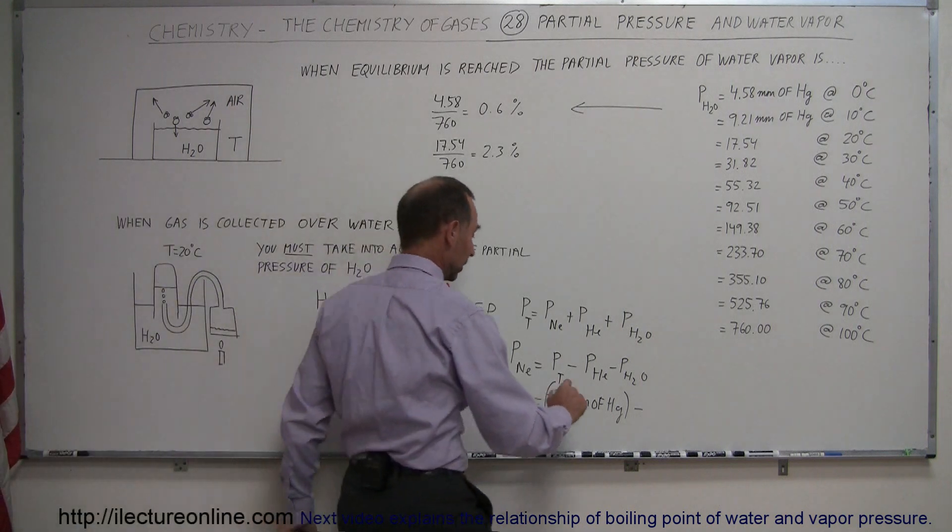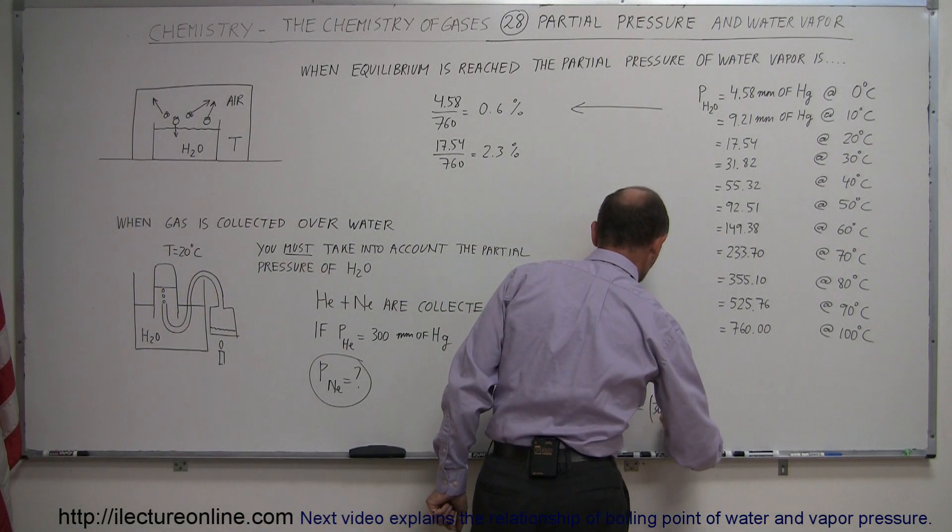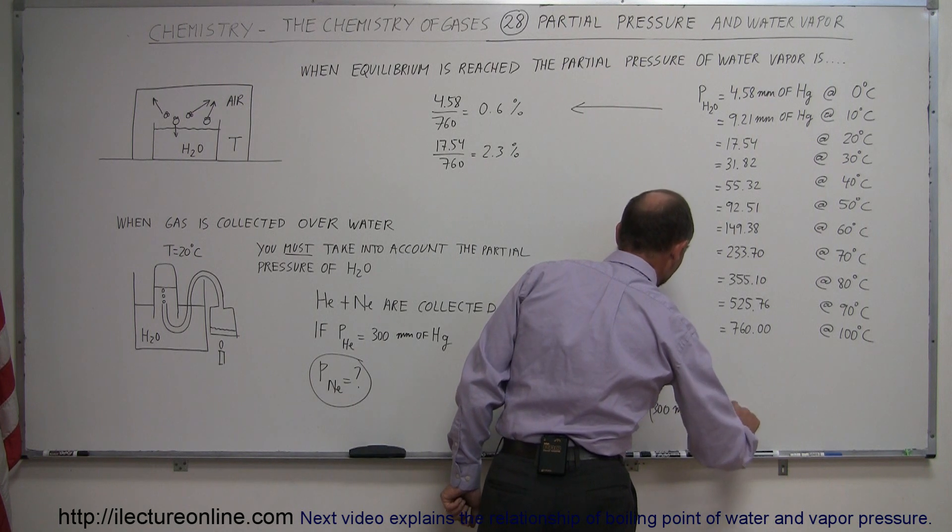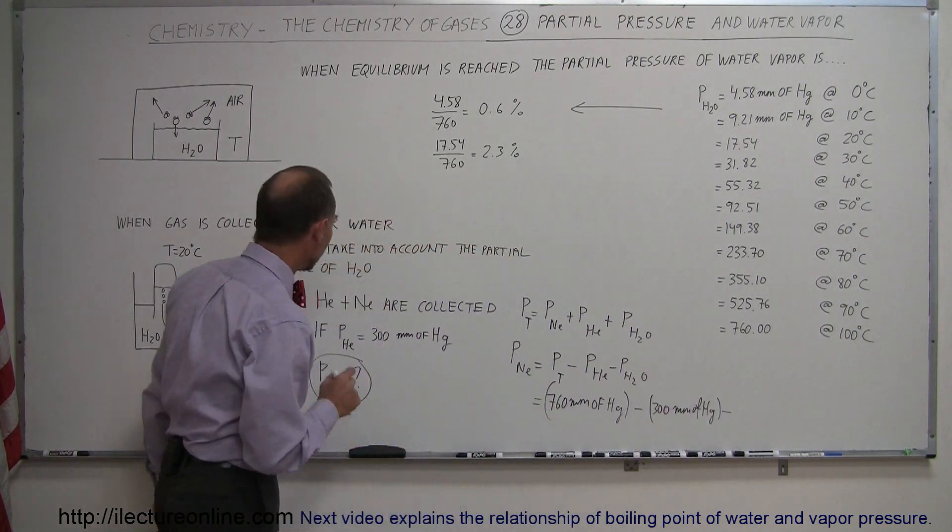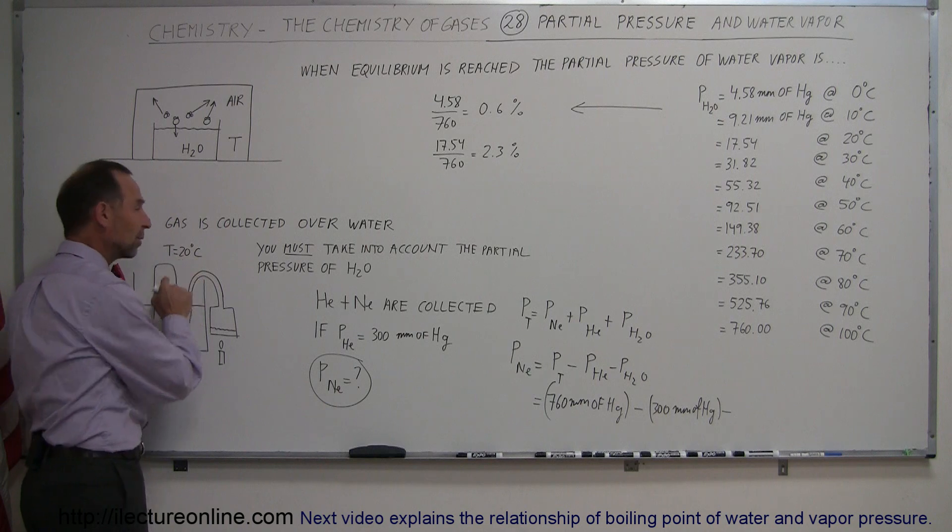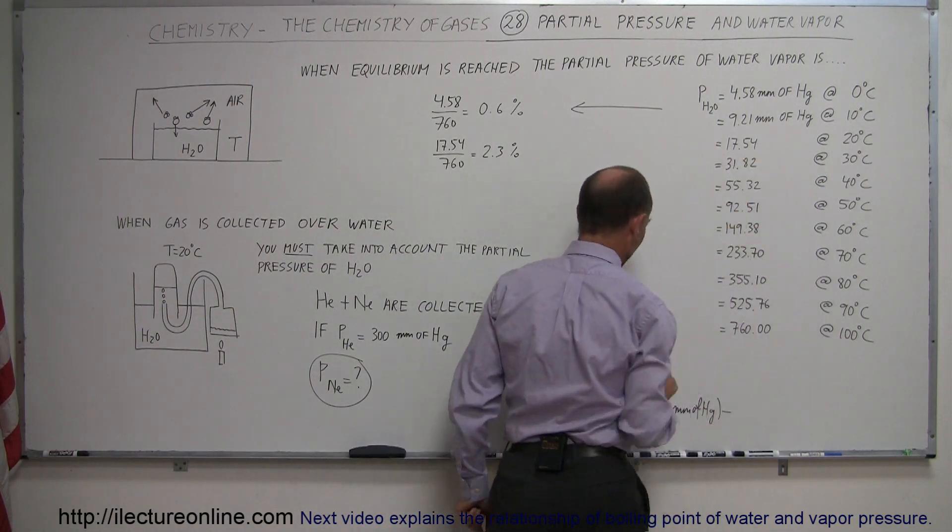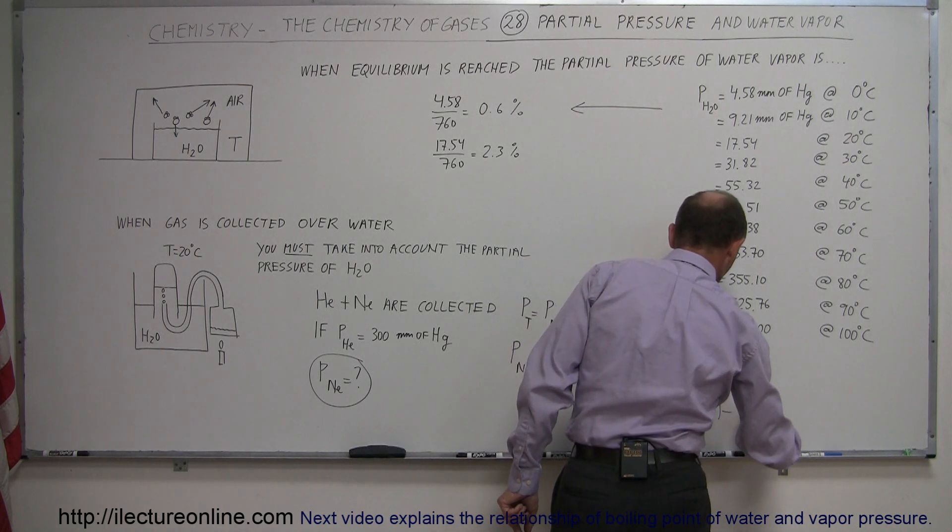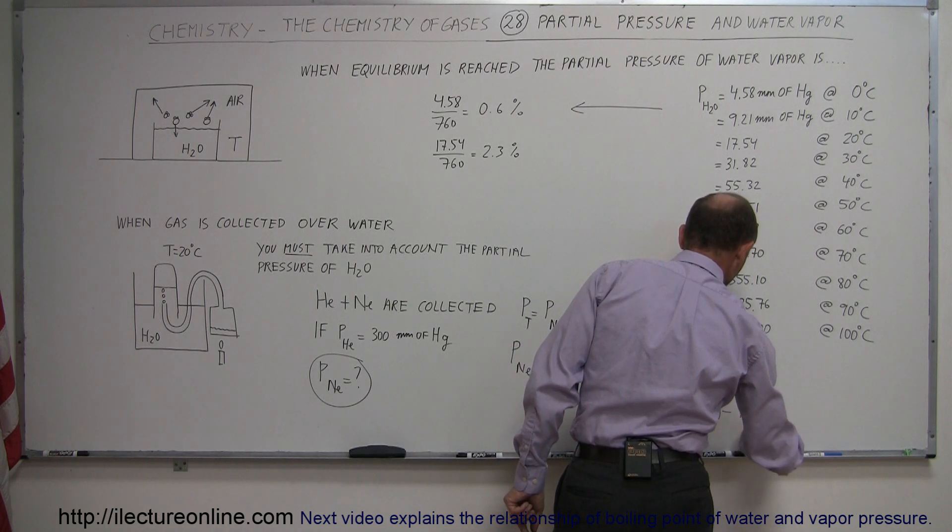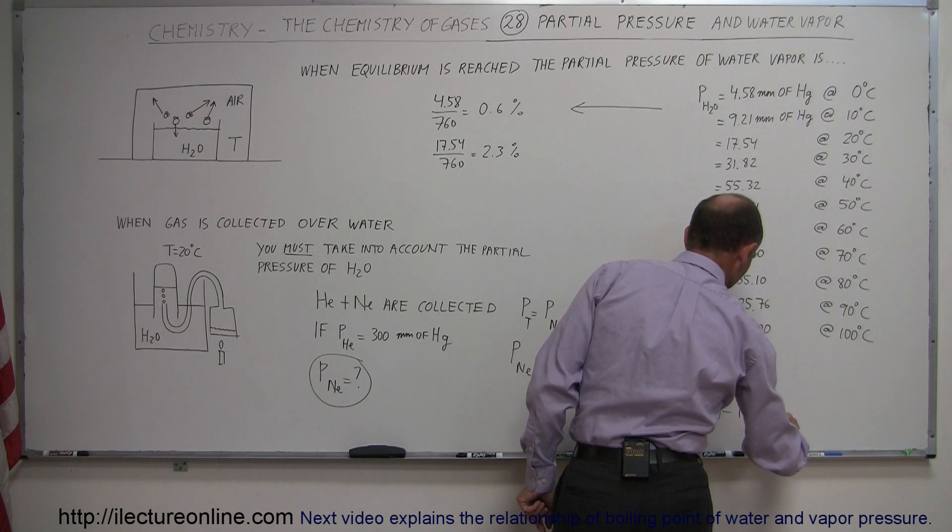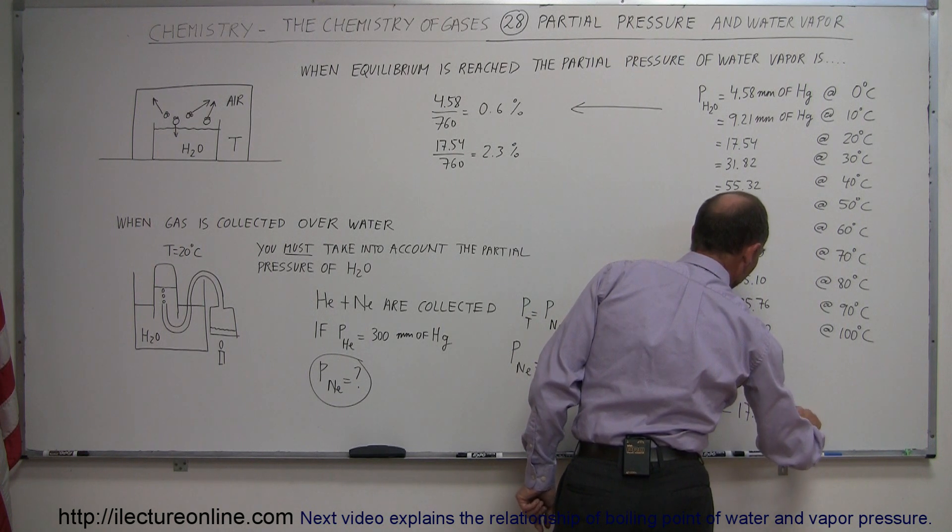From that we subtract the partial pressure of helium, which we were told was 300 millimeters. That would be 300 millimeters of mercury minus the partial pressure of the water vapor. And assuming that it's fully saturated at 20 degrees centigrade, at 20 degrees centigrade it accounts for 17.5 millimeters of mercury.